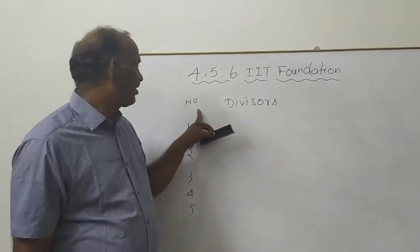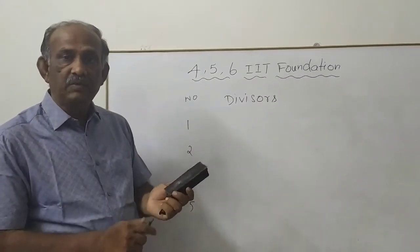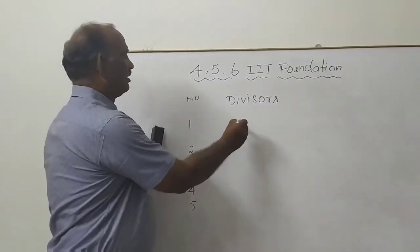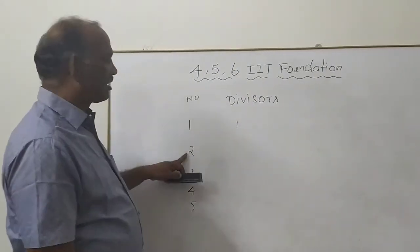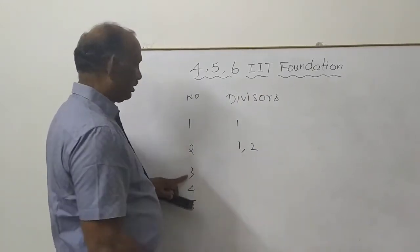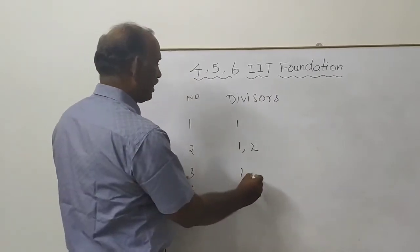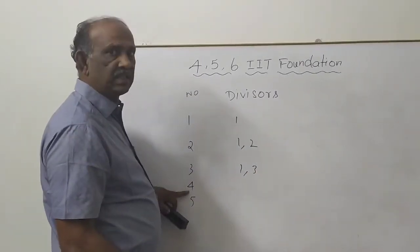Now let us take number 1. What are the divisors of 1? Otherwise factors. 1 is a factor. What are the factors of 2? Factors of 2 is 1 and 2. What are the factors or divisors of 3? 1 and 3. What are the divisors of 4?